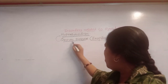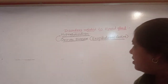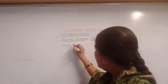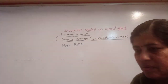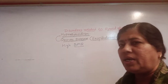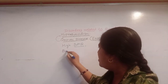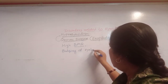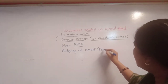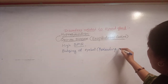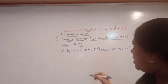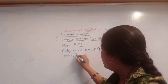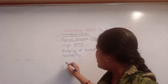Graves disease, also called exophthalmic goiter, is characterized by high BMR — that is, high basal metabolic rate. It also involves bulging or protruding eyeballs, irritability, and weight loss.